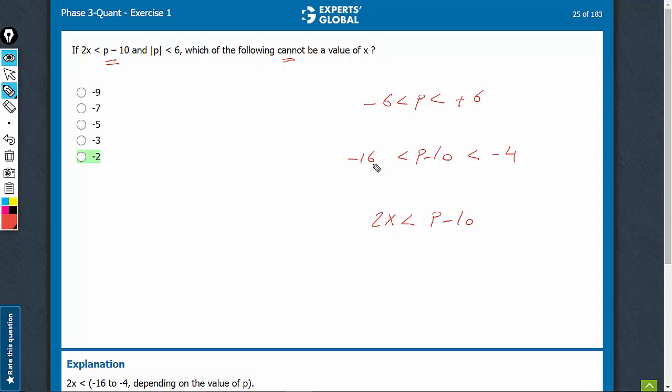So 2x can be negative 20 also. If 2x is negative 20, then x is negative 10. So such values are possible.